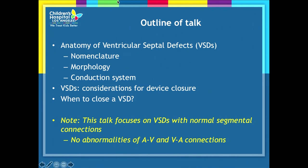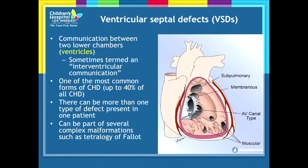I will focus on VSDs by themselves — that is, where they are the primary lesion. There can be an ASD, but really it's about VSDs. I'm not going to talk about VSDs in association with more complex congenital heart defects such as tetralogy of Fallot or DORV, or anything with abnormal AV and VA connections. VSDs are essentially a communication between the two ventricles. It is the most common form of congenital heart disease, up to 40%. There can be more than one type of defect present in one patient.